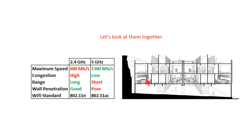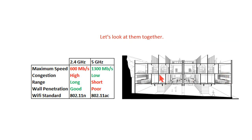Putting it all together: with the 2.4 gigahertz network, you'll be able to access it at the extremities of your home, but data transfer will be pretty low. Your 5 gigahertz network will have much higher data transfer rates; however, you will not be able to access it very far from the router itself — you'll have to come closer to get those higher speeds.